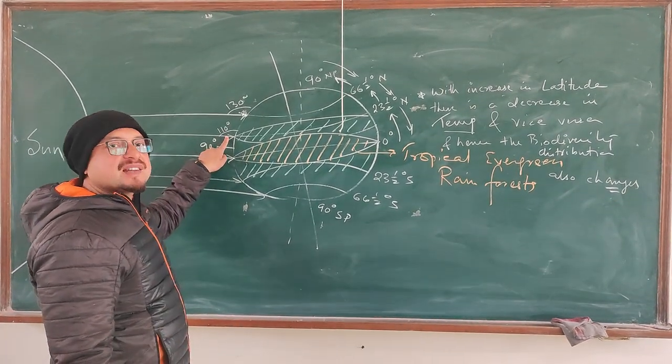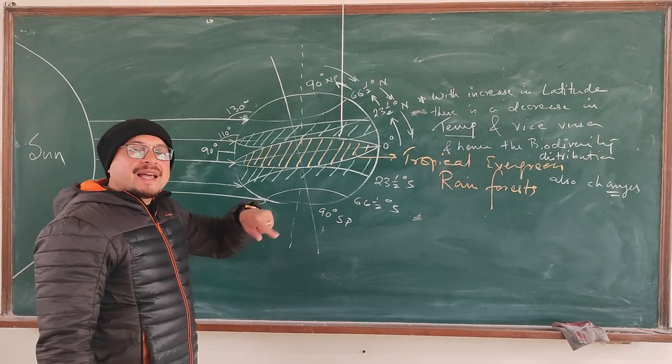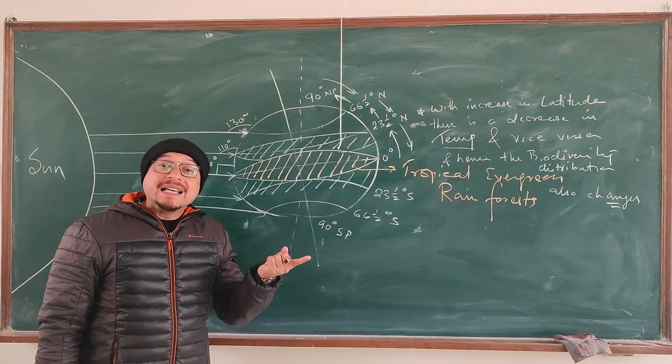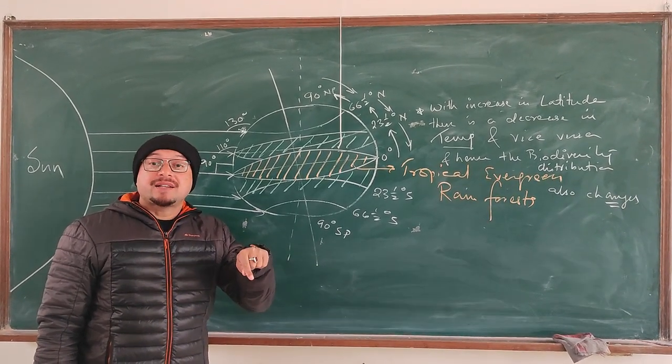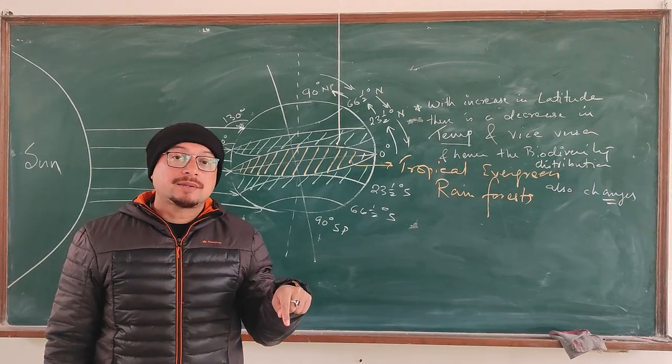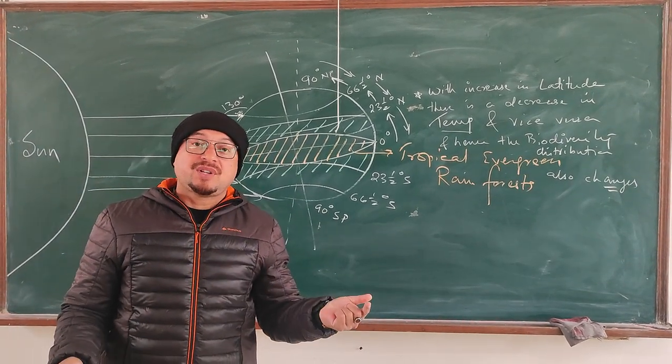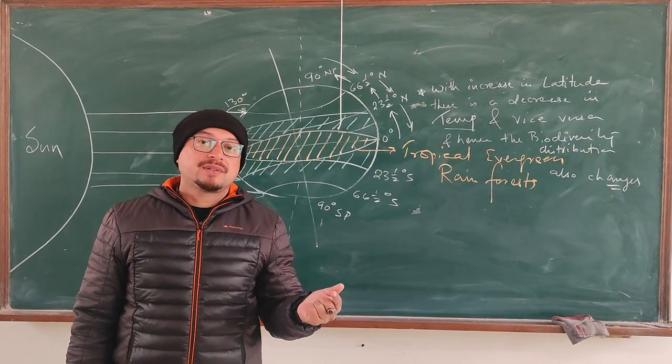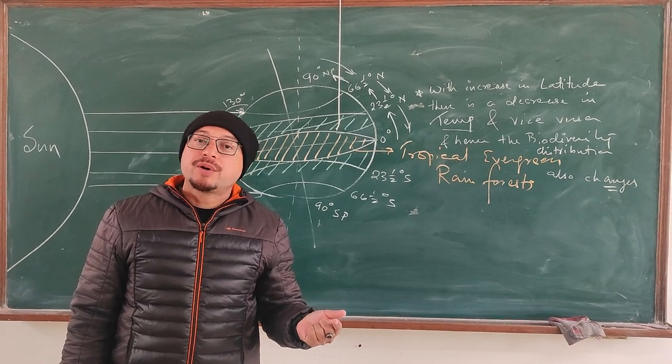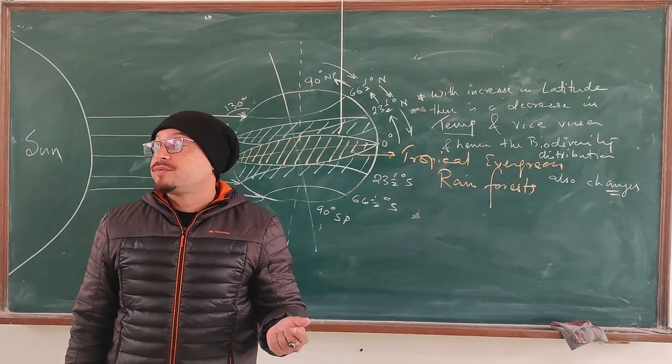As the angle of incidence is increasing, the intensity of sunlight would decrease and hence the temperature would also decrease. So therefore precipitation would also decrease, giving rise to tropical deciduous forest.